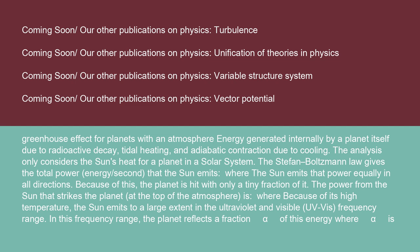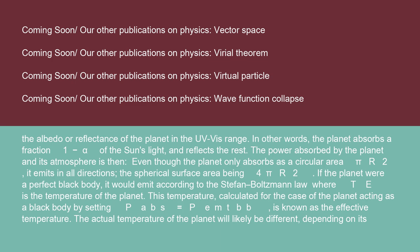The analysis considers only the Sun's heat for a planet in a solar system. The Stefan-Boltzmann law gives the total power (energy per second) that the Sun emits, where it emits that power equally in all directions, so the planet is hit with only a tiny fraction. Because of its high temperature, the Sun emits largely in the ultraviolet and visible (UV-vis) frequency range. In this frequency range, the planet reflects a fraction alpha of this energy, where alpha is the albedo or reflectance of the planet in the UV-vis range. The planet absorbs a fraction (1 − α) of the Sun's light and reflects the rest.